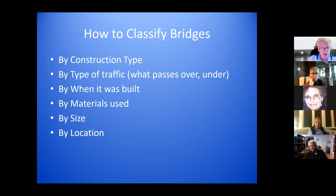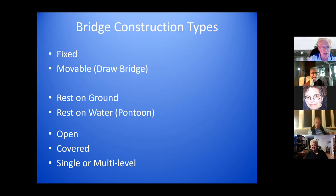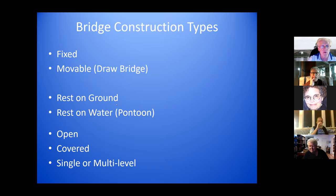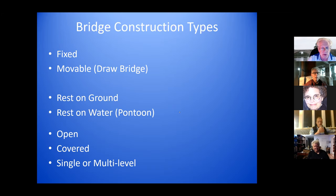The construction types are either fixed bridges — bridges that don't move, or mostly don't move, some of them wobble — and then there are drawbridges, which are movable bridges. They can either rest on the ground or rest on the water as pontoon bridges. They can be open bridges or covered bridges, and they can have a single level for transport or multiple levels.